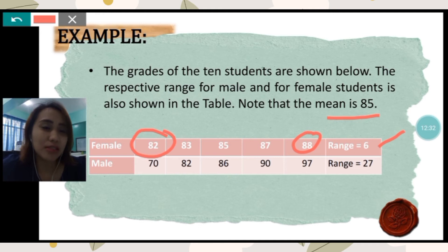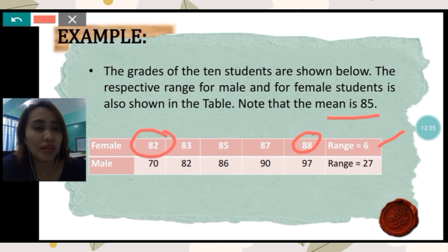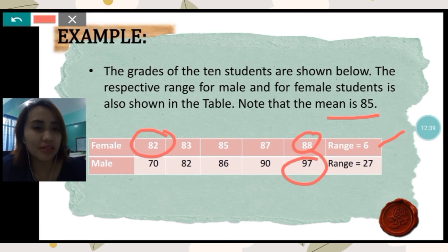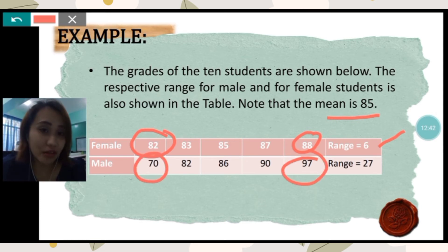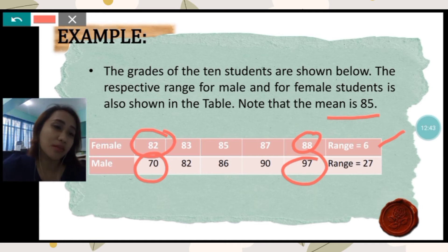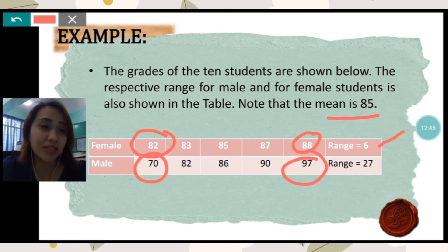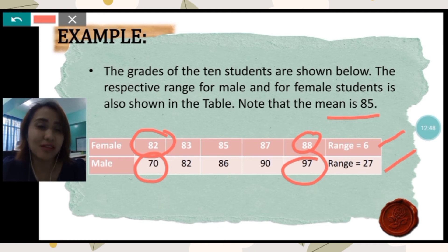For the male students, the highest grade is 97 and the lowest is 70. So, in finding the range, simply subtract: 97 minus 70, which is 27.